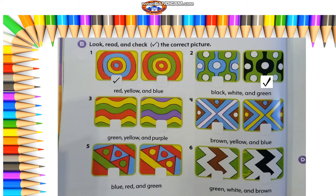Number three: we have green, yellow and purple. Excellent, it's the right one. Number four: we have brown, yellow and blue. It's the right picture again. Number five: we have the colors blue, red and green. Yes, it's the left picture. And number six: we have the colors green, white and brown. Of course, it's the left one.